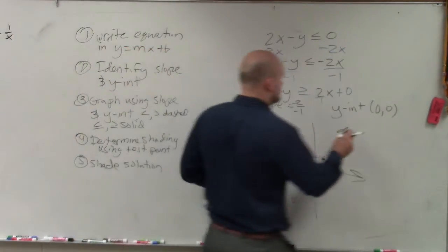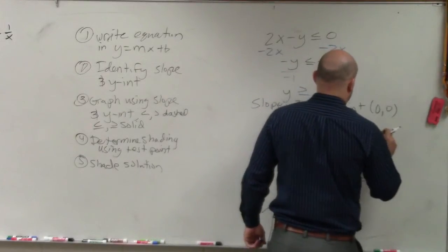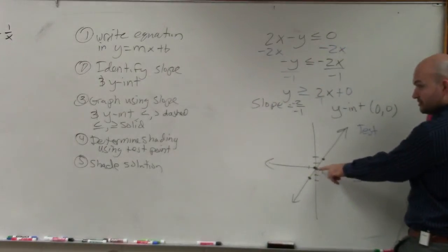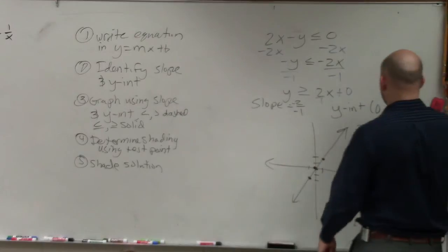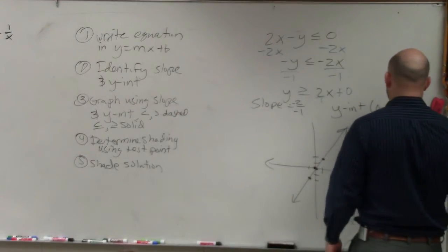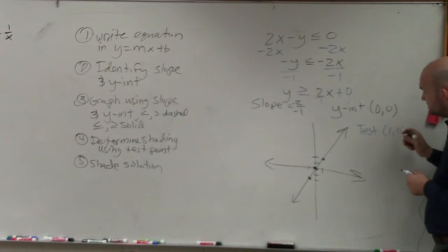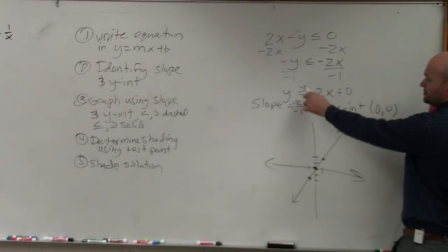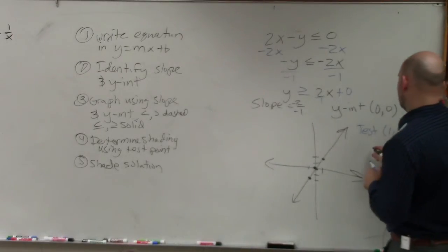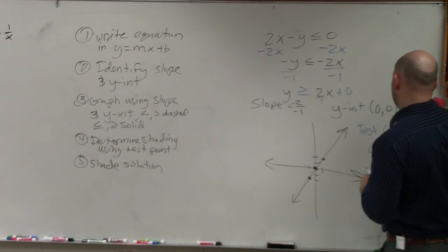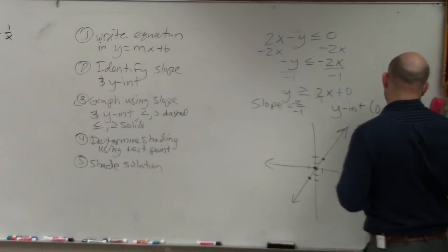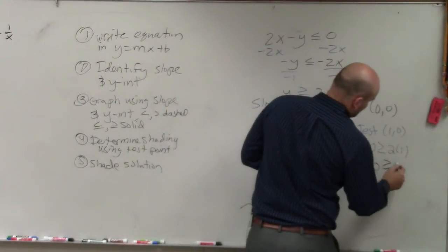So I am going to test, I can't test 0, 0 because 0, 0 is on the graph. I'm going to test 1, 0. So I'm going to plug 1 in for x and 0 in for y. You just plug it back into your equation here. So I have 0 is greater than or equal to 2 times 1. 0 is greater than or equal to 1.